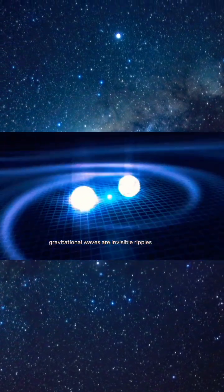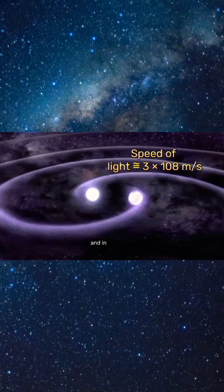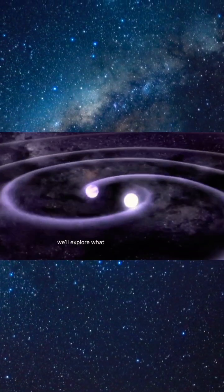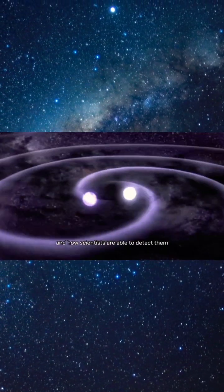Gravitational waves are invisible ripples in space and time that travel at the speed of light. And in this video, we'll explore what gravitational waves are and how they're created, and how scientists are able to detect them.